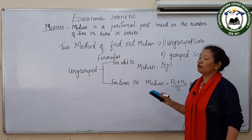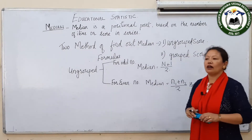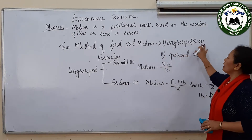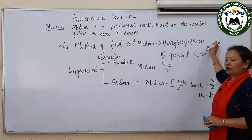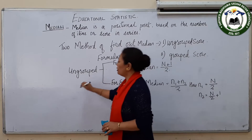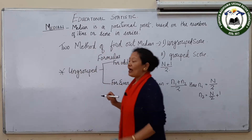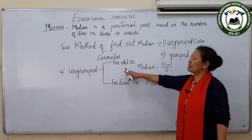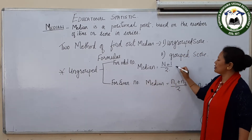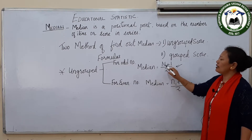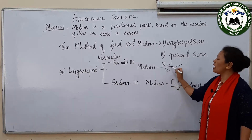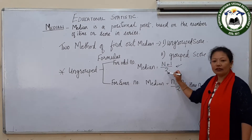Like we have done in mean, we follow two different methods to find out the median — either for ungrouped scores or grouped scores. Now for the ungrouped score, we have two formulas. The first one is for odd numbers: the formula is (N+1) divided by 2, where N is the total number of scores.